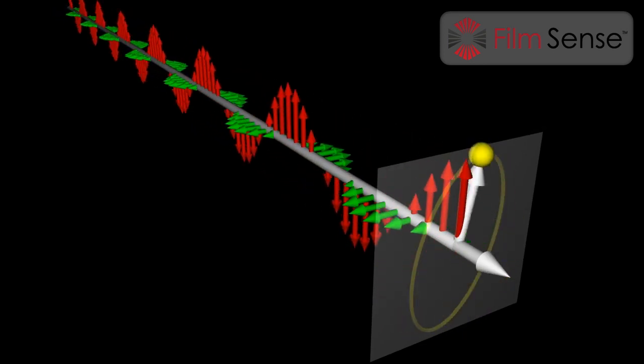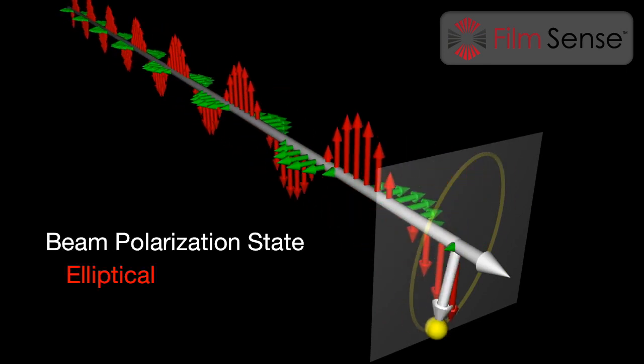If the two waves have different amplitudes or arbitrary phases, elliptically polarized light is generated. This is where the term ellipsometry comes from.